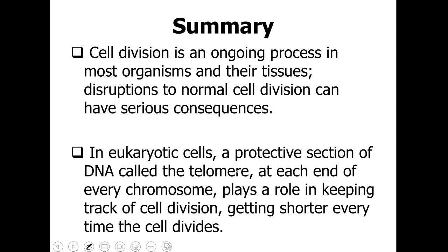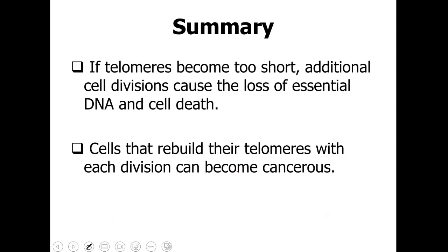In summary, cell division is an ongoing process in most organisms and their tissues. Disruptions to normal cell division can have serious consequences. In eukaryotic cells, a protective section of DNA called the telomere at each end of every chromosome plays an important role in keeping track of cell division, getting shorter every time that cell divides. Think of it like an odometer — it counts how many times that cell divides, and once it reaches a specific number, usually 80 to 90, or even as few as 50 divisions, the cell is pre-programmed for cellular death. Cells that rebuild their telomeres with each division can become cancerous, so while longer telomeres slow aging, you don't want to keep rebuilding them to the point they become cancer.